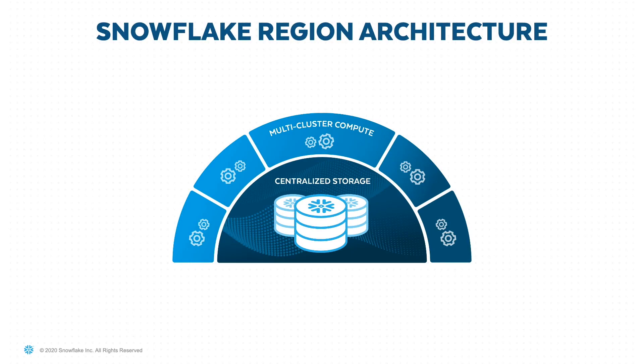The last tier runs the cloud services for the Snowflake region. Cloud services is really the control plane of a Snowflake region and the interface to all external clients. For each customer account, the cloud services tier manages client sessions, metadata, transactions, query planning, security and governance, and many other services. It is also a very highly scalable tier without any scale limitation. Large Snowflake regions are supporting thousands of customer accounts and hundreds of millions of queries every day.